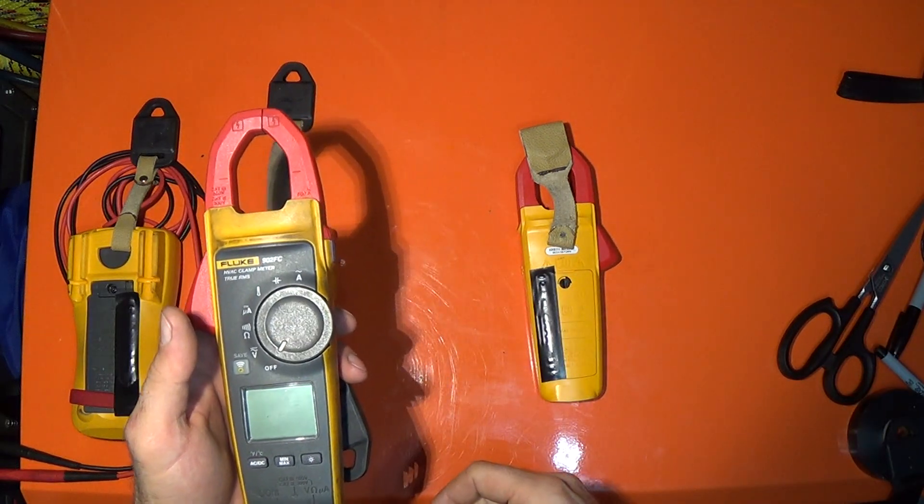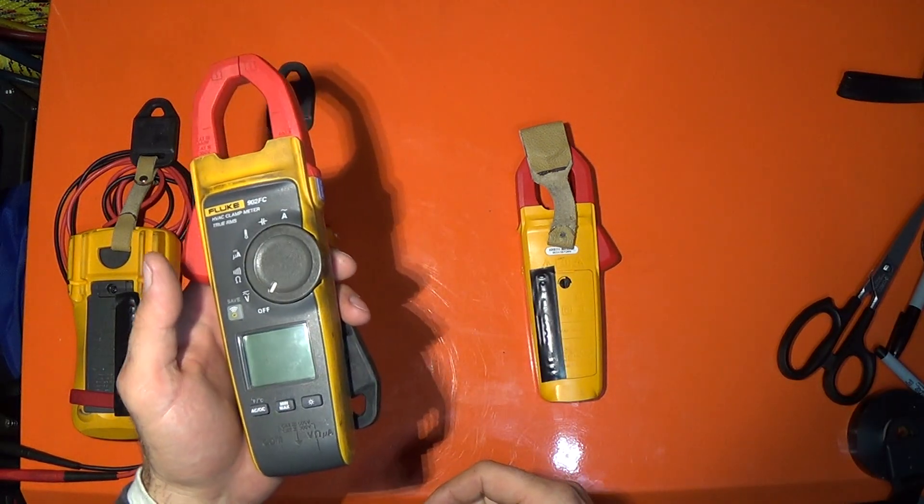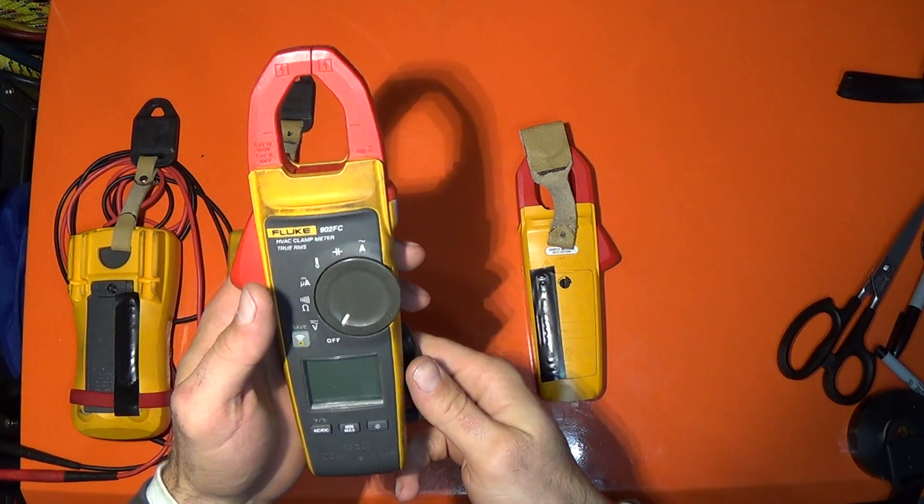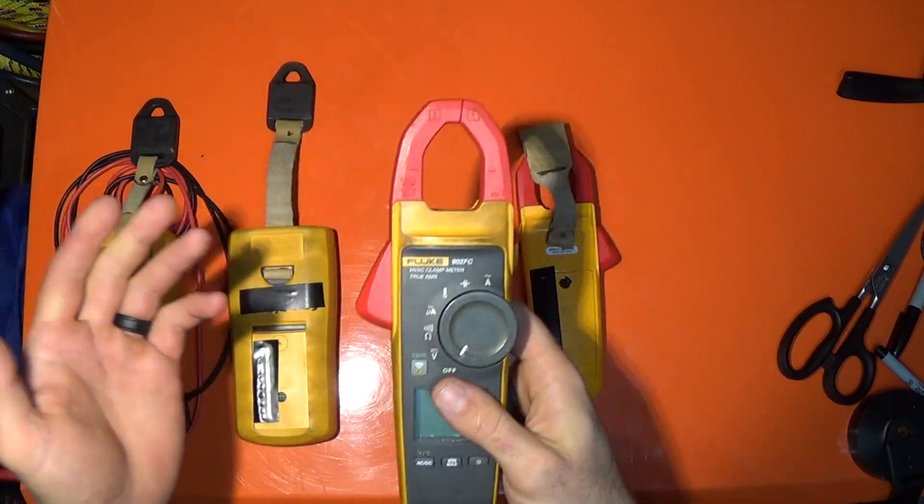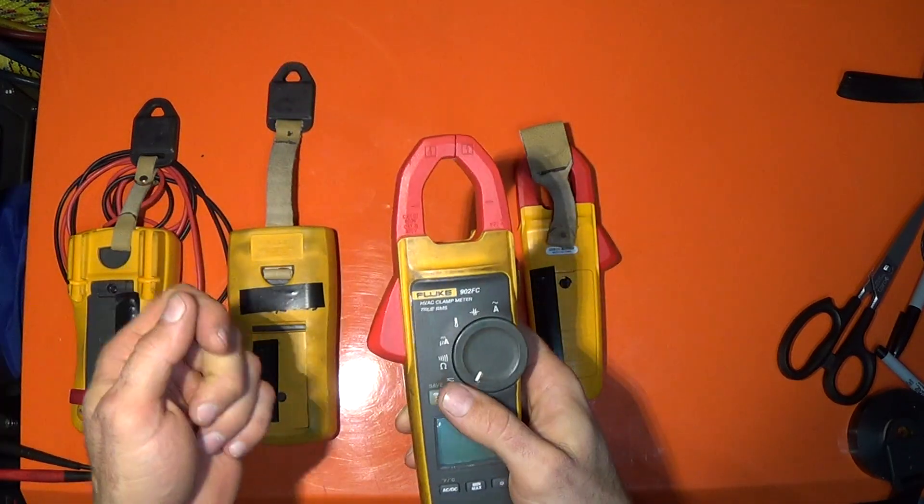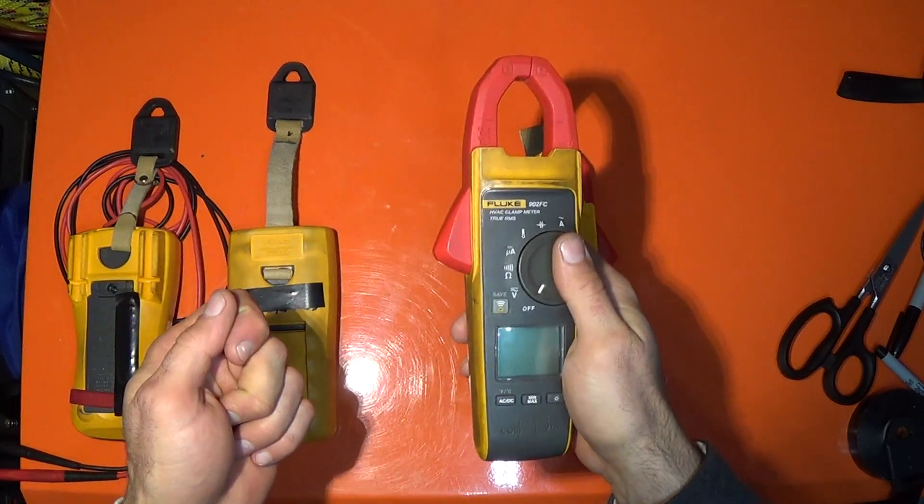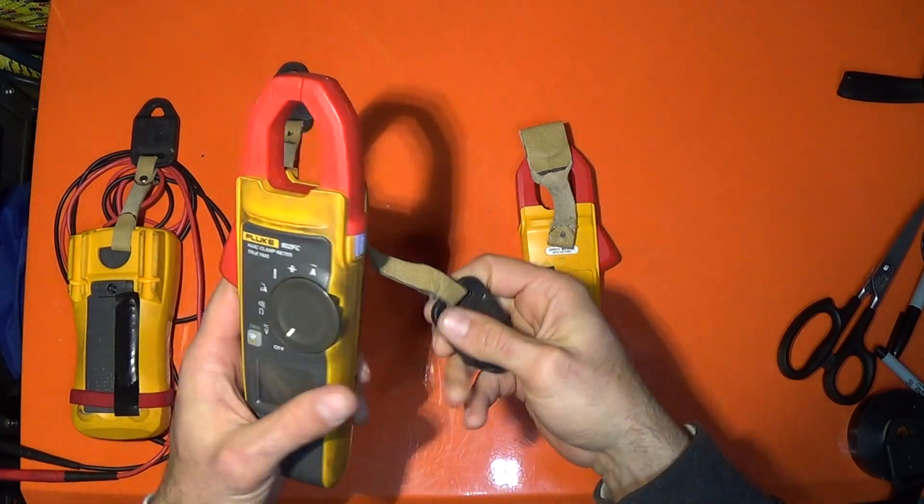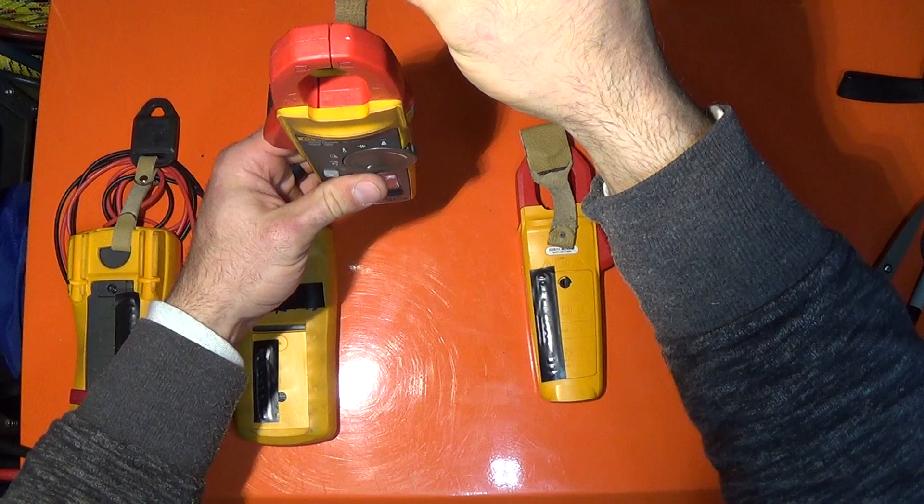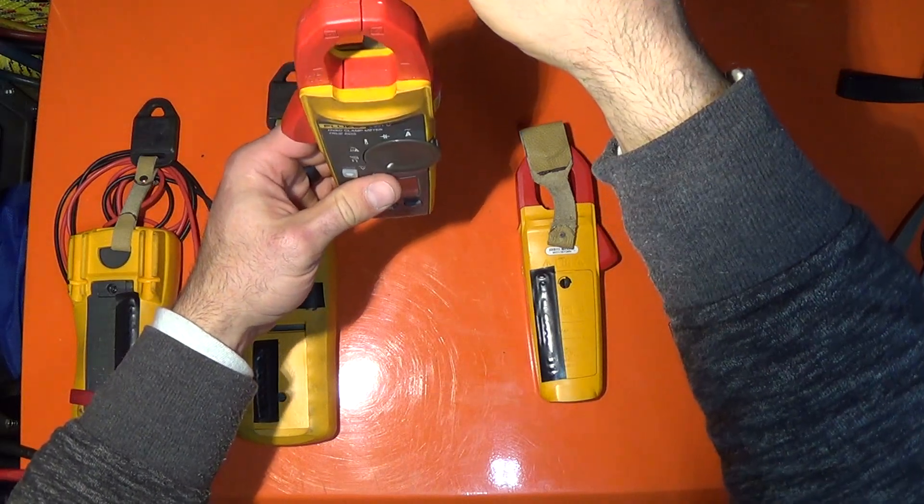I want to talk about adding magnets to your multimeter. These are really useful because a lot of times you need a third hand - you've got one hand for one lead, one for the other, and then your multimeter. So if you have a magnet, you can just hang it off something metal or wrap it around something.